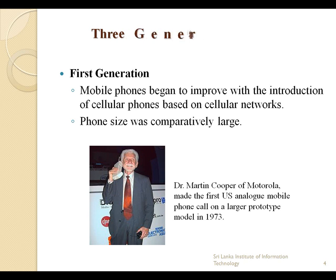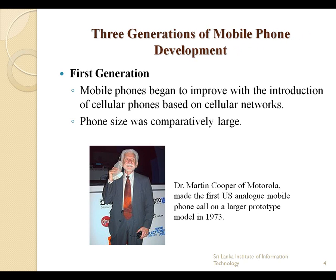Mobile phone development can be divided into three generations — first generation, second generation, and third generation. In this slide, we are going to talk about the first generation of mobile phones. Mobile phones began to improve with cellular phones based on cellular networks. A cellular network is a network made up of a number of radio cells, each served by a fixed transmitter. The transmission used analog signaling.